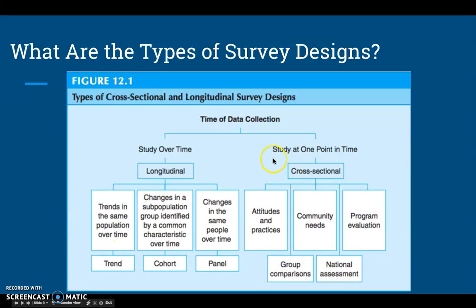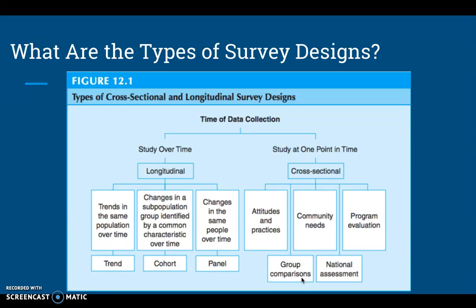Cross-sectional study, on the other hand, collects data at one specific point in time — a cross-section of attitudes, community needs, or evaluations at that moment. You can also do group comparisons within a cross-sectional design. For example, with our school climate survey we'll be looking at parents, staff, and students' responses to many of the same types of questions.